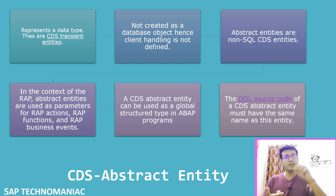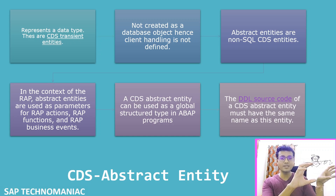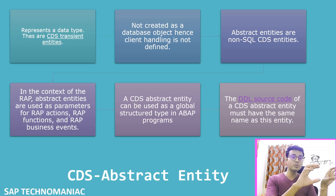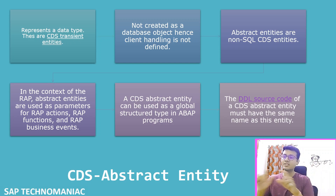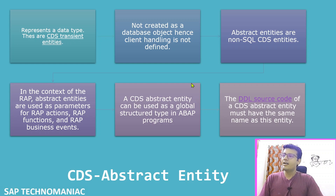Basically, the CDS abstract entity is like a structure. To compare it with classical ABAP: using a structure you can't get data from the database, but using a view you can. In the same way, the CDS abstract entity is like a structure in the CDS framework. These are called transient entities.